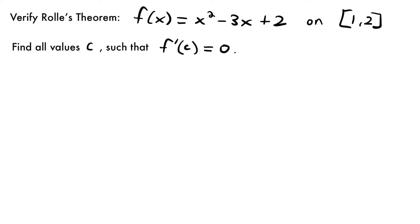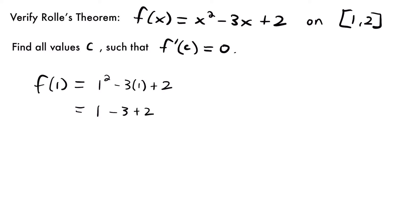The first thing we want to do when we verify Rolle's Theorem is check our endpoints. The most important part is that the two points we are trying to connect have the same height — the same y value. So we have to make sure that each endpoint outputs the same value when plugged into our original function. We'll start with our lower endpoint: f of 1 equals 1 squared minus 3 times 1 plus 2, which equals 1 minus 3 plus 2, which equals 0. Now let's plug in 2. If f of 2 also equals 0, then we can use Rolle's Theorem.